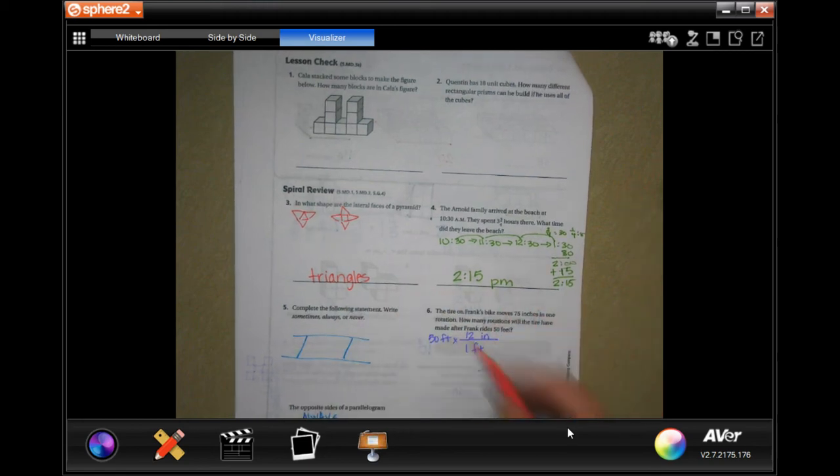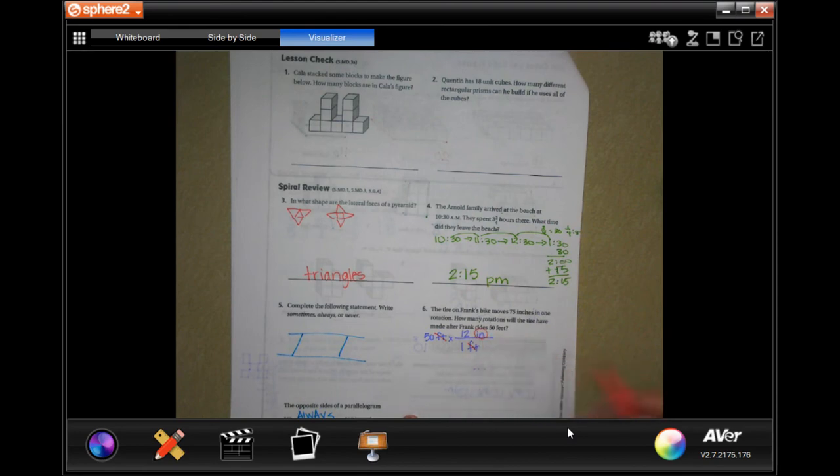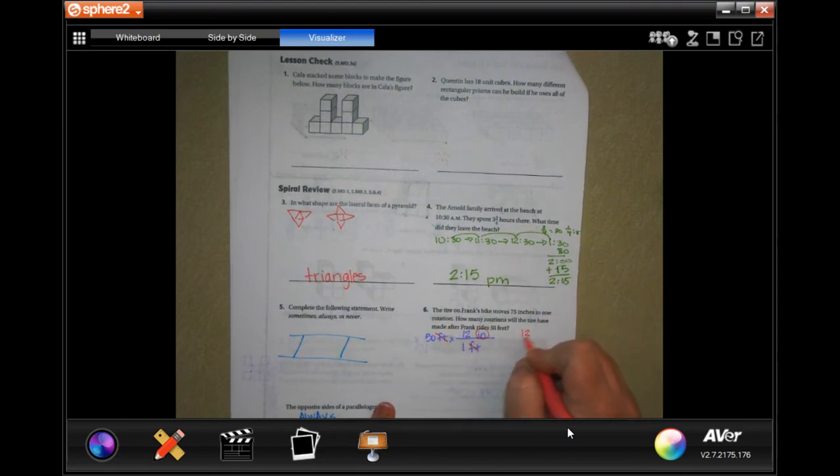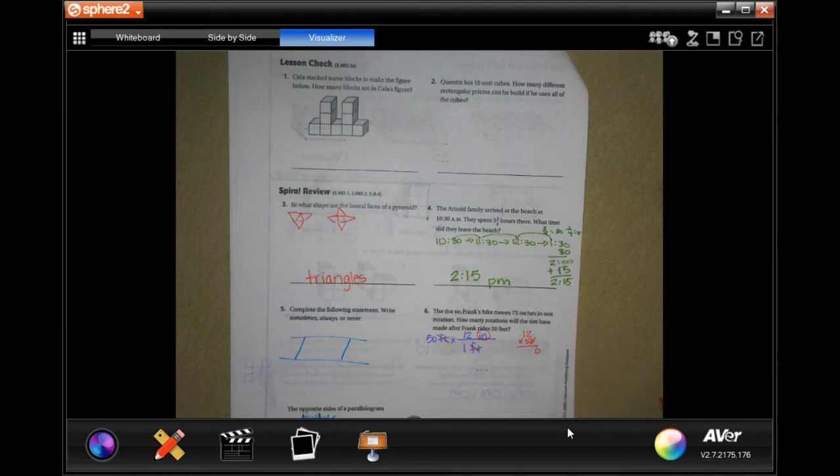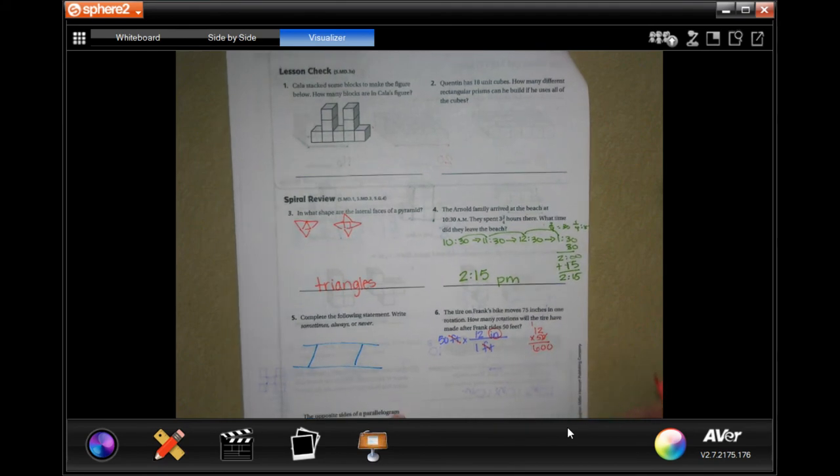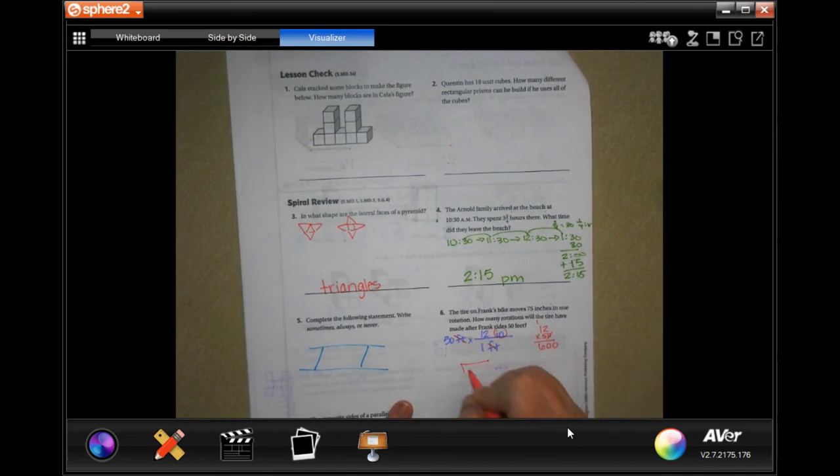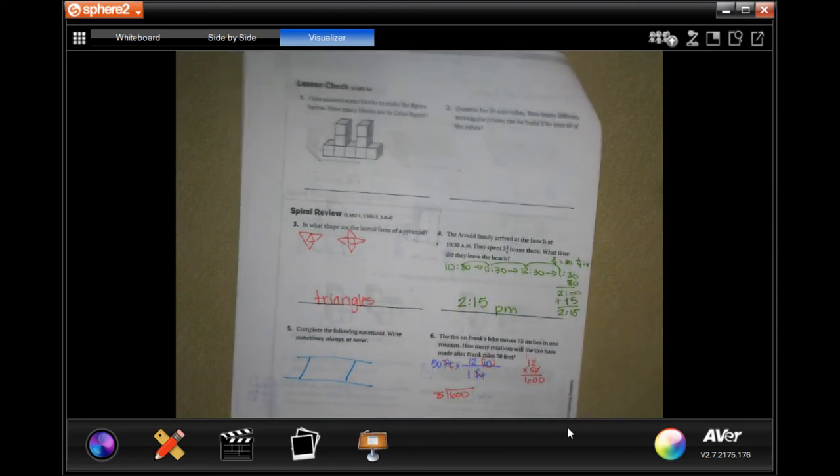So, now, I'm going to cross out feet. I'm left in inches. That's good. So, now to do 50 times 12, I'm going to put the 12 on top because I'm just going to take that zero and put on the end. And, now, 5 times 2 is 10, carry the 1. 5 times 1 is 5 plus 1 more is 6. So, 600. So, now, I'm going to put the 600 in the book and 75 outside.